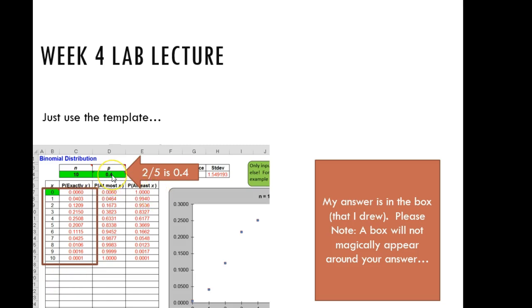So I changed my p-value to two divided by five, which of course shows is 0.4. Two divided by five is 0.4.